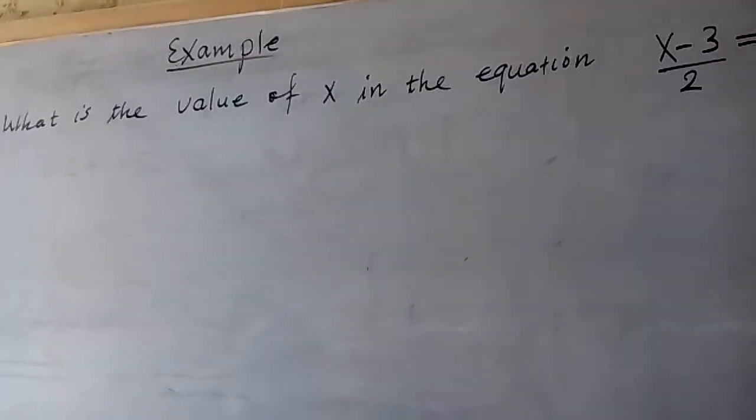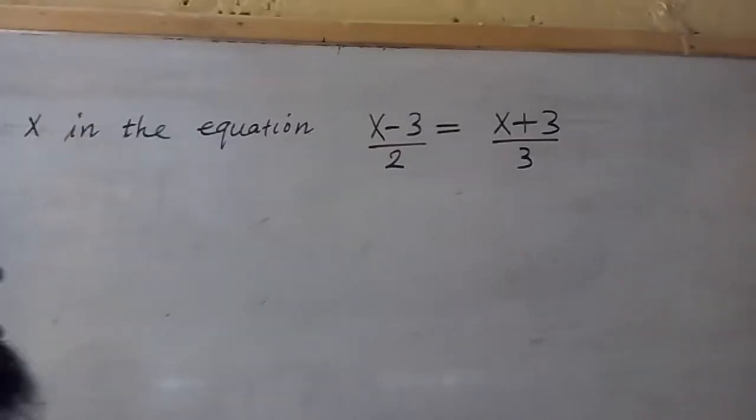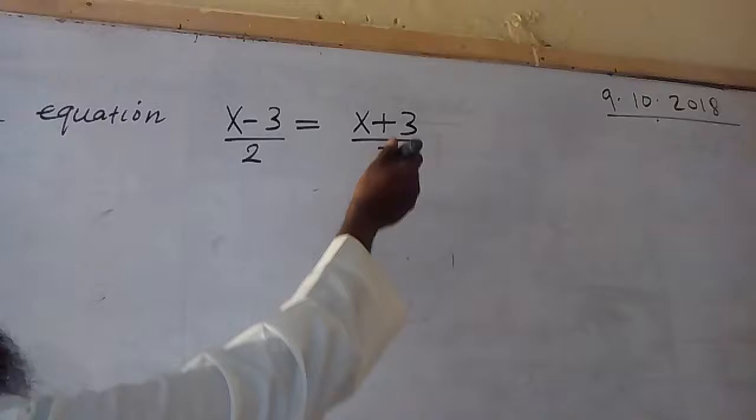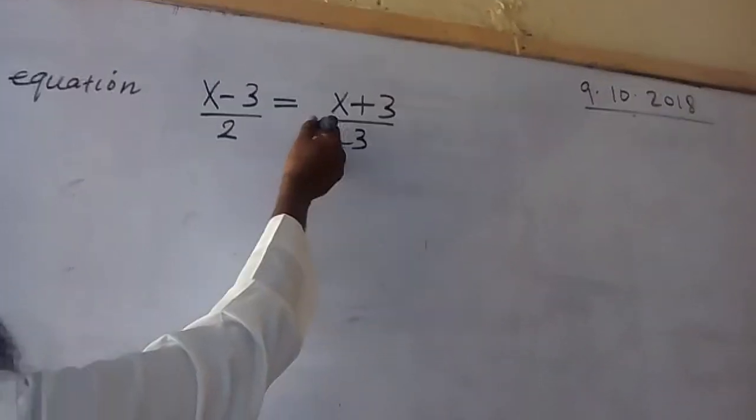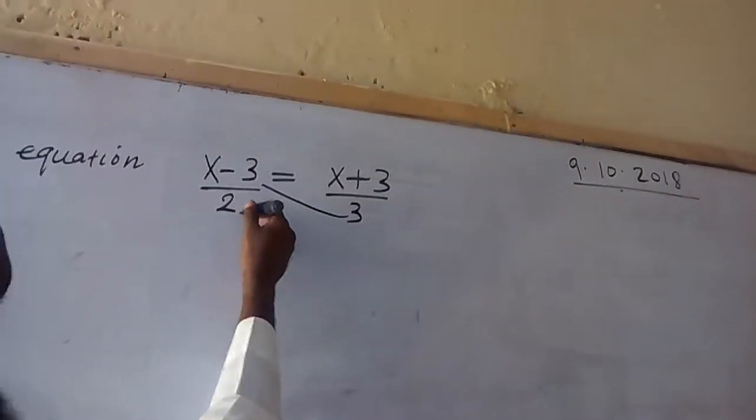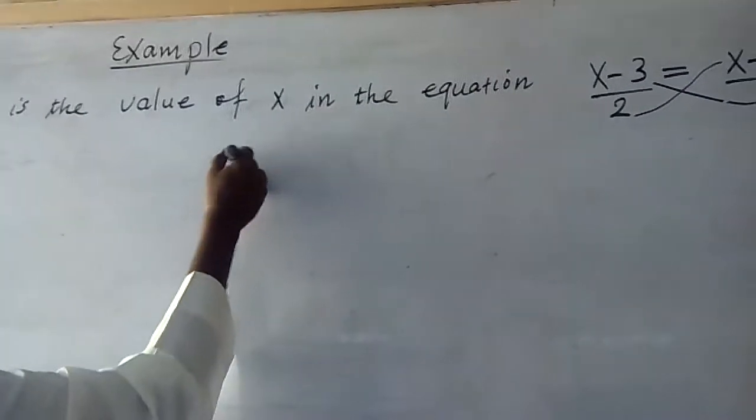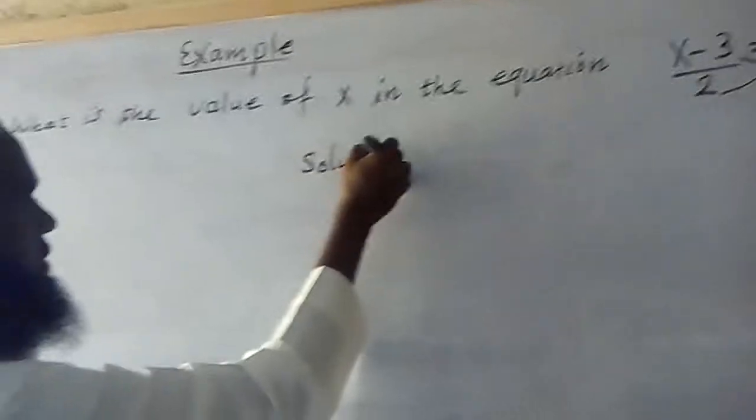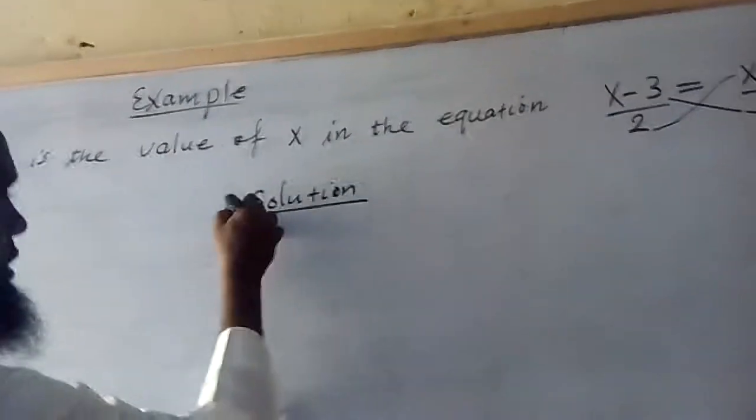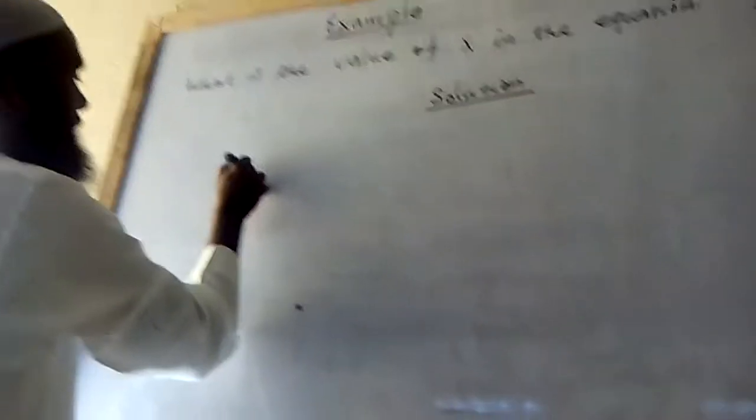Okay, now I want to have a cross multiplication. What is the cross multiplication? So the solution, I know three bracket x minus three equals.